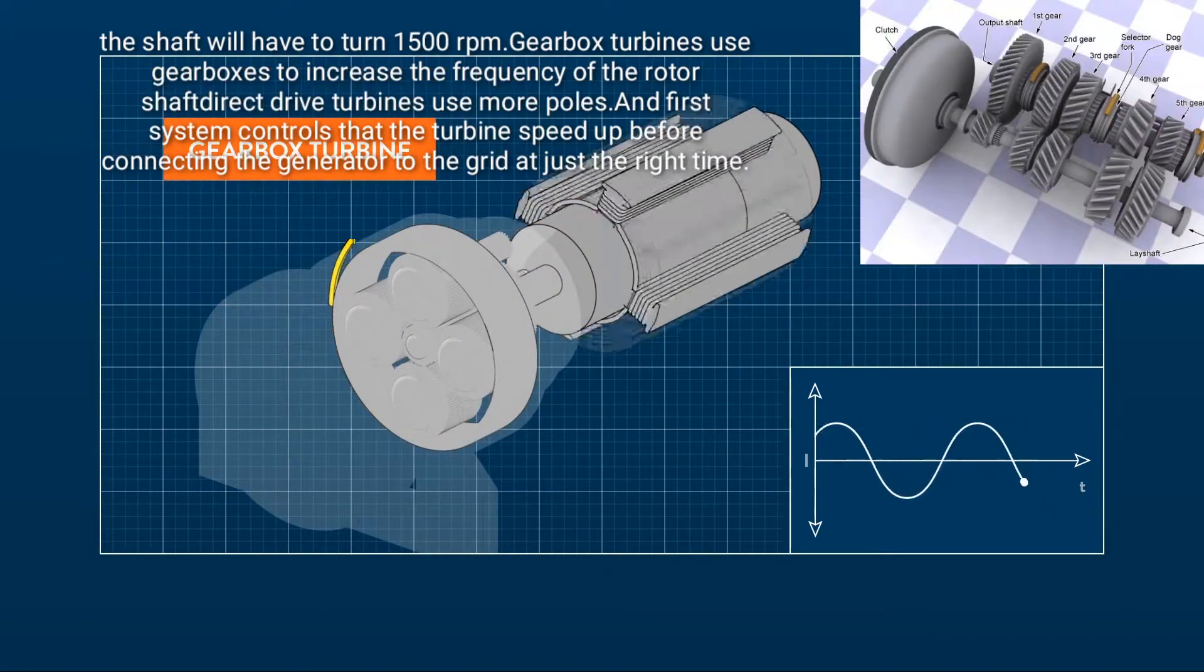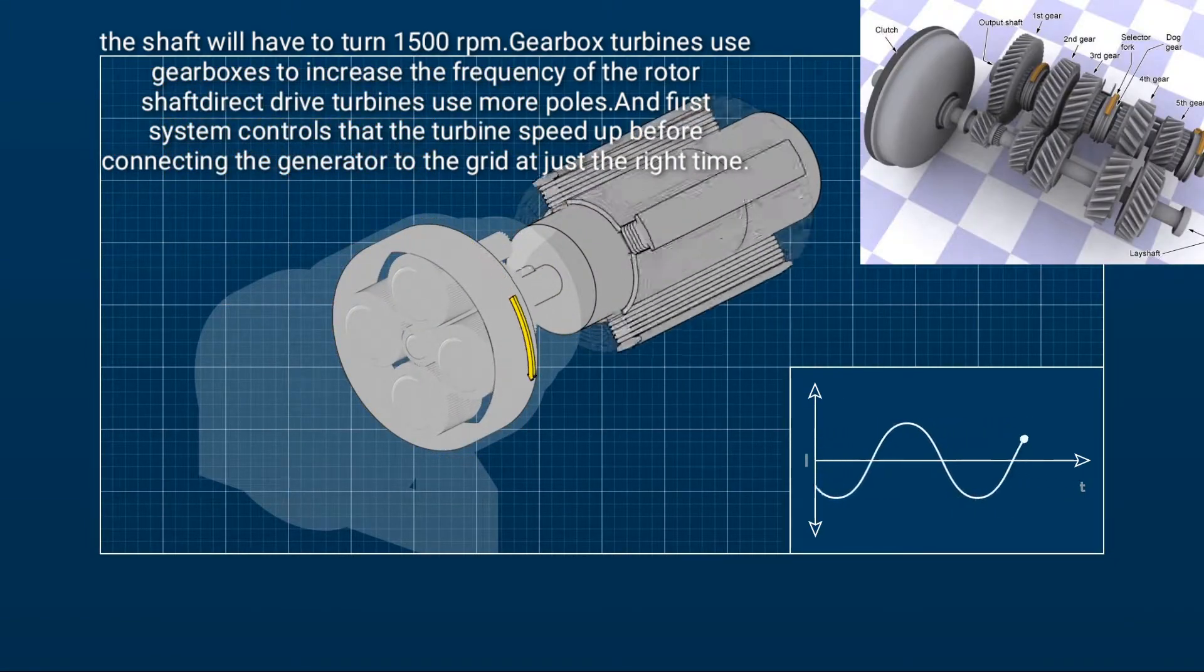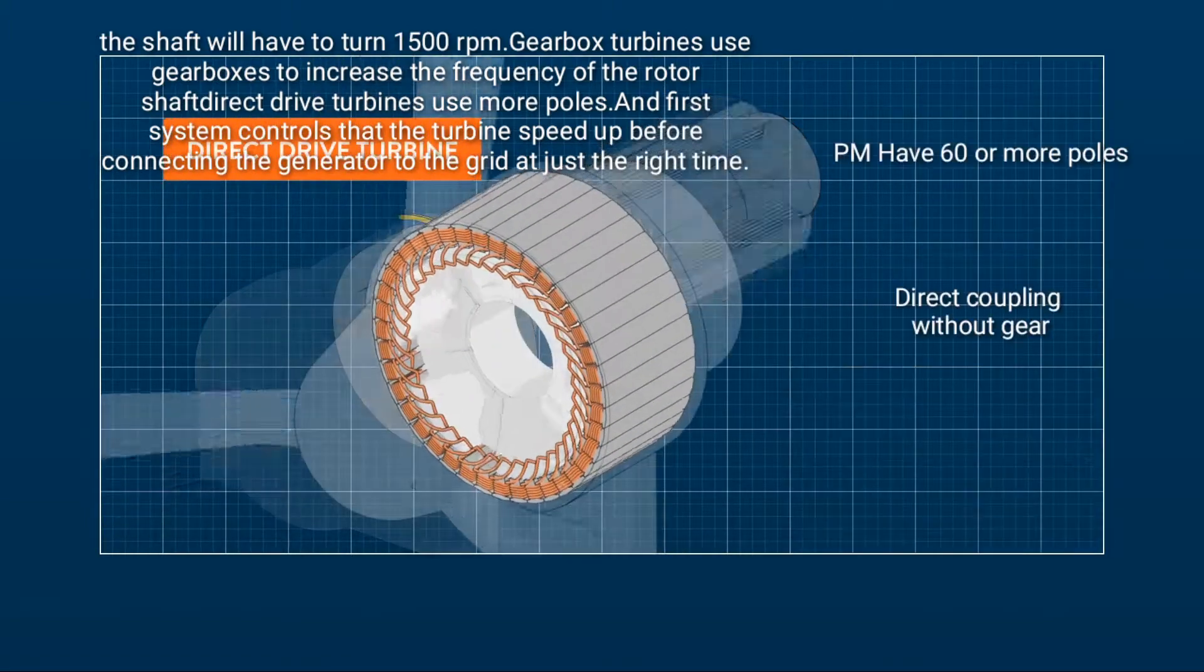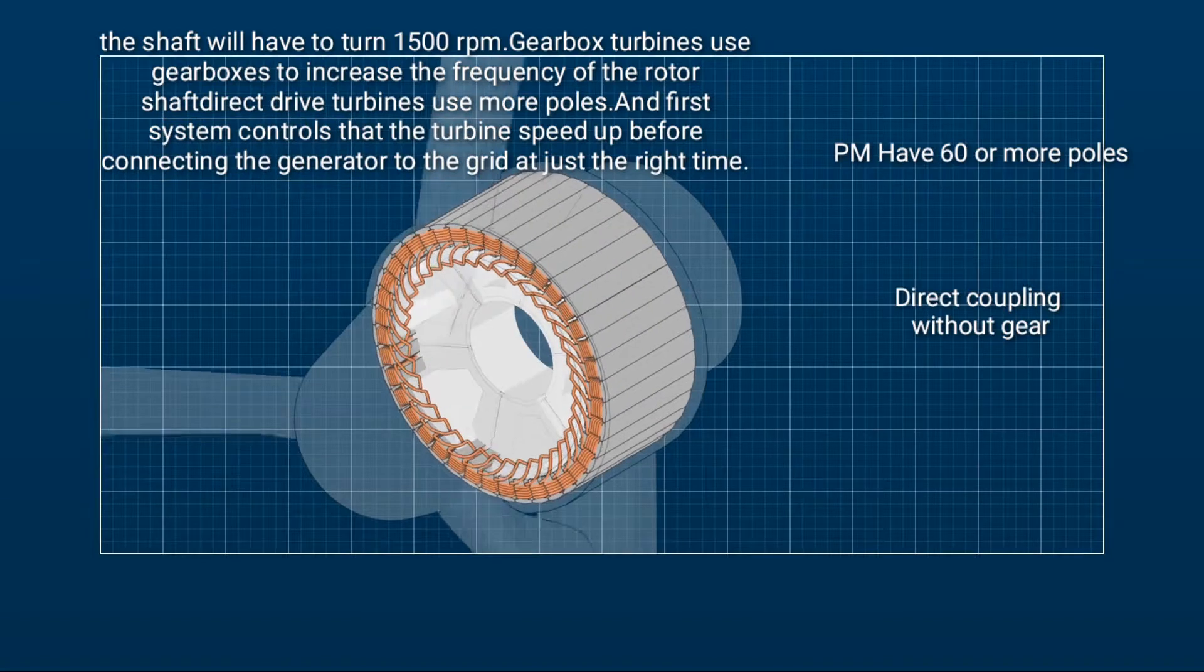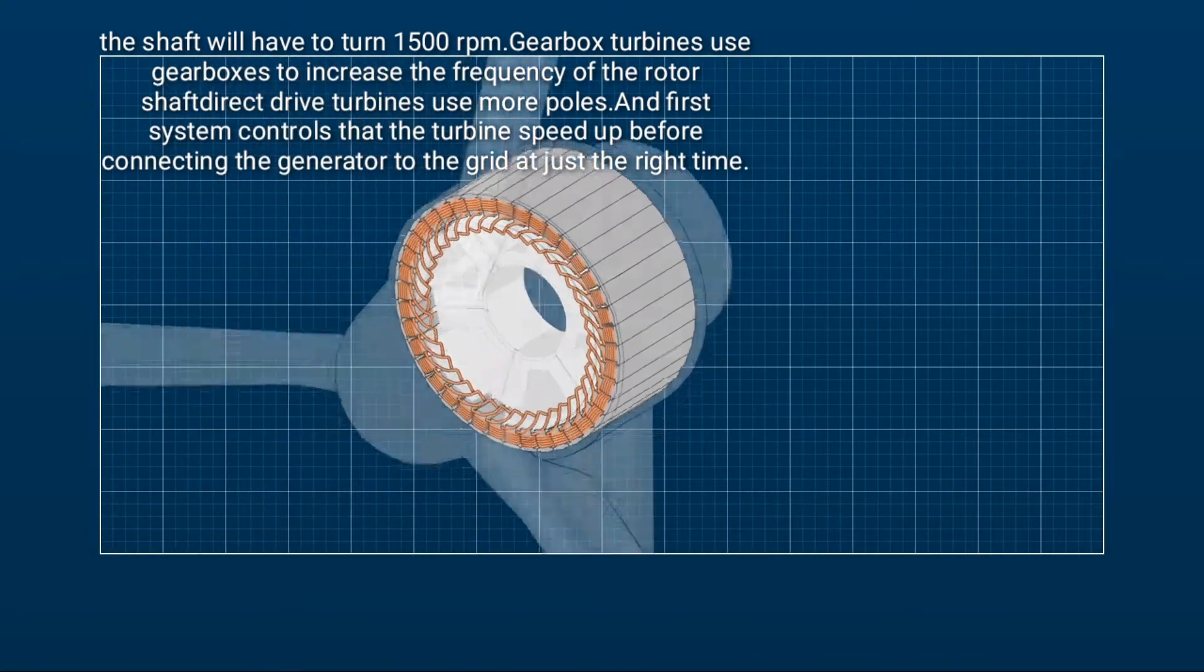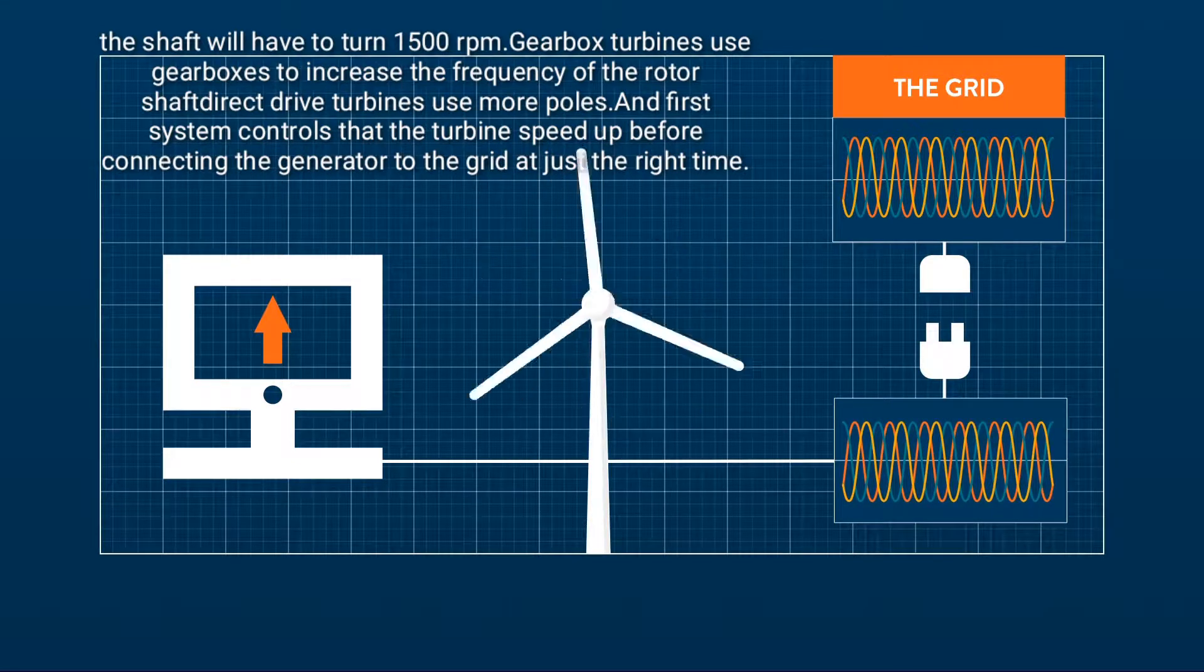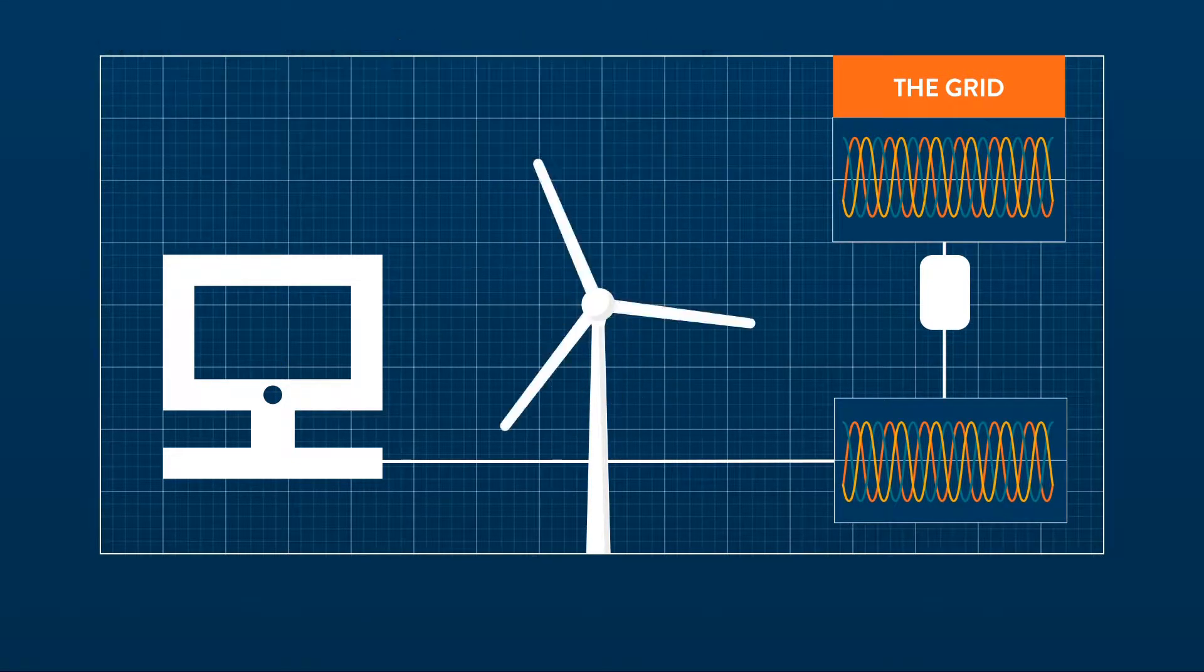Gearbox turbines use gearboxes to increase the frequency of the rotor shaft. Direct drive turbines use more poles. And soft start system controls let the turbine speed up before connecting the generator to the grid at just the right time.